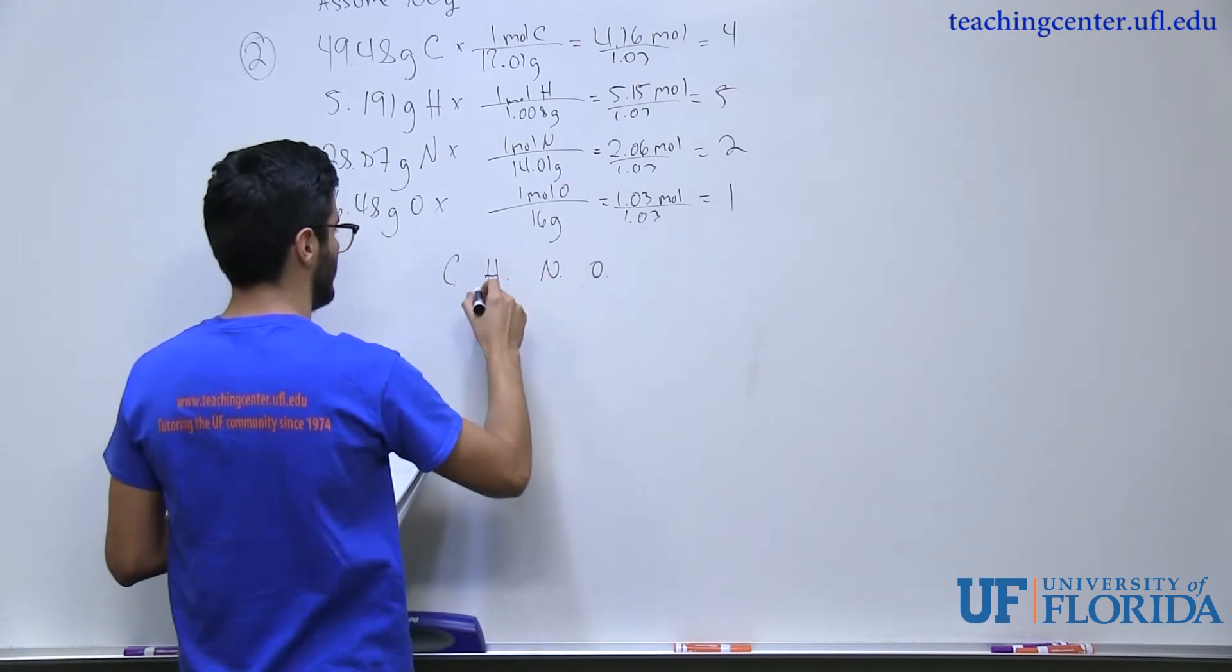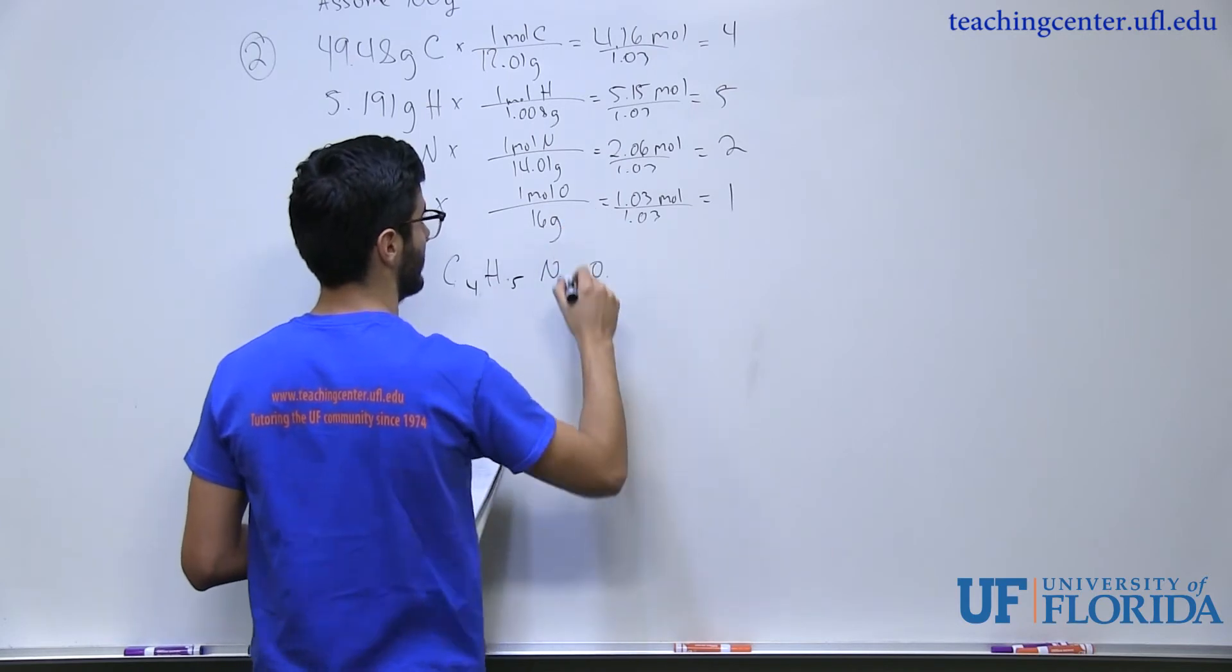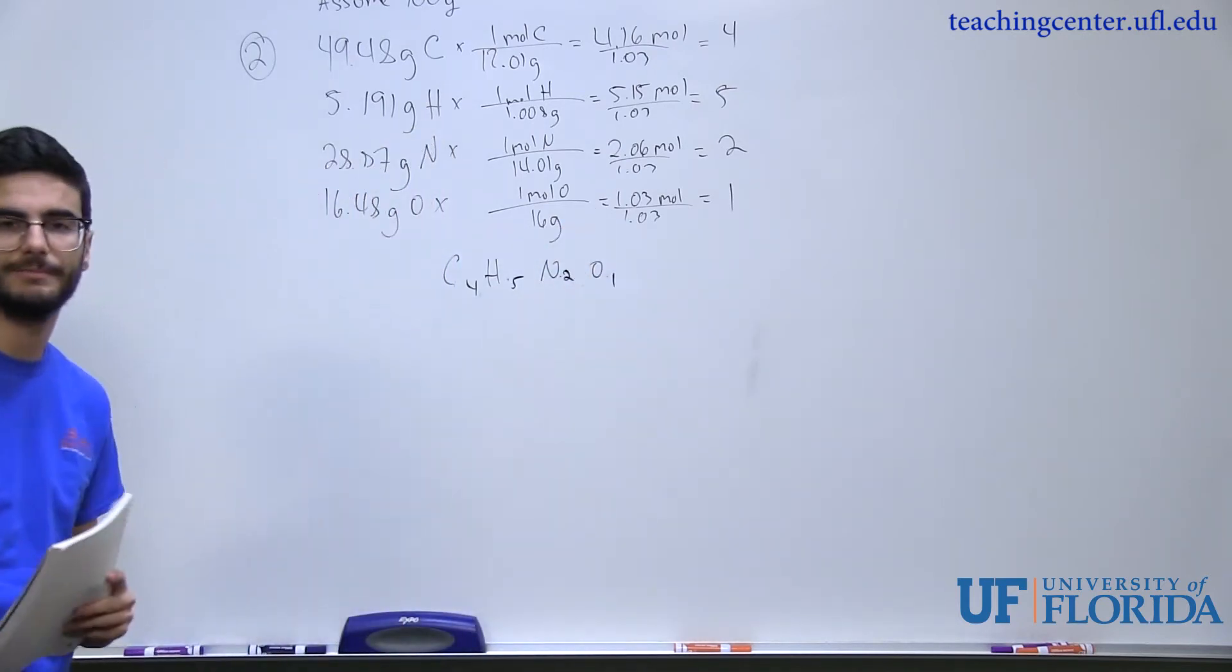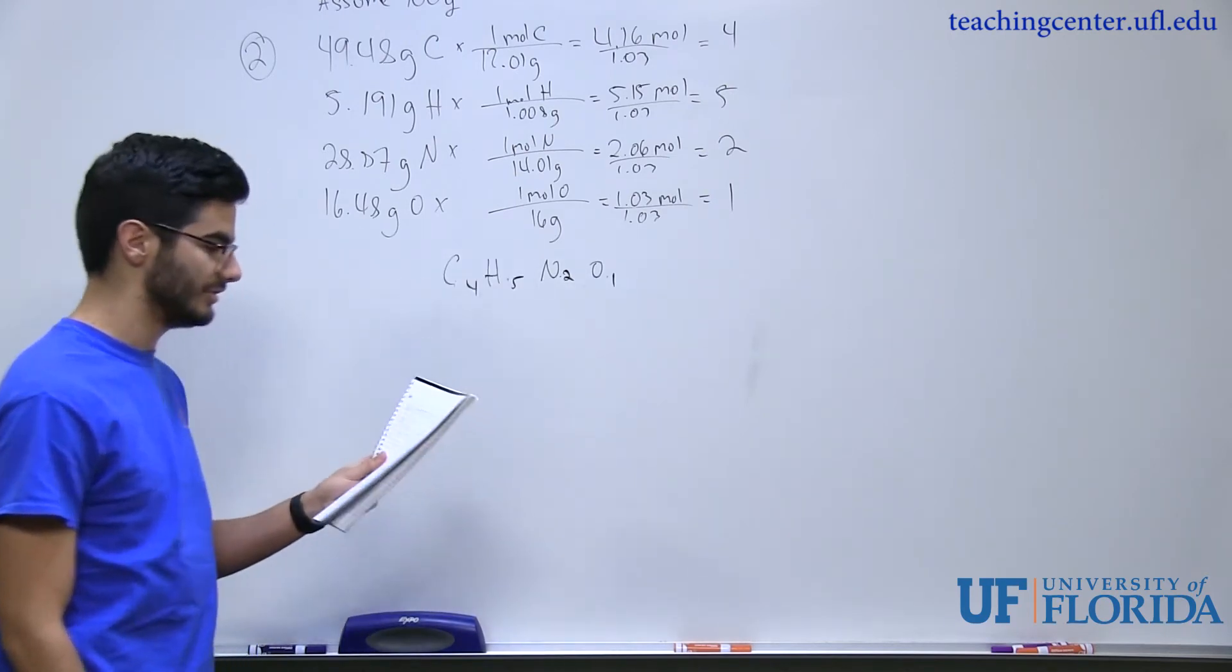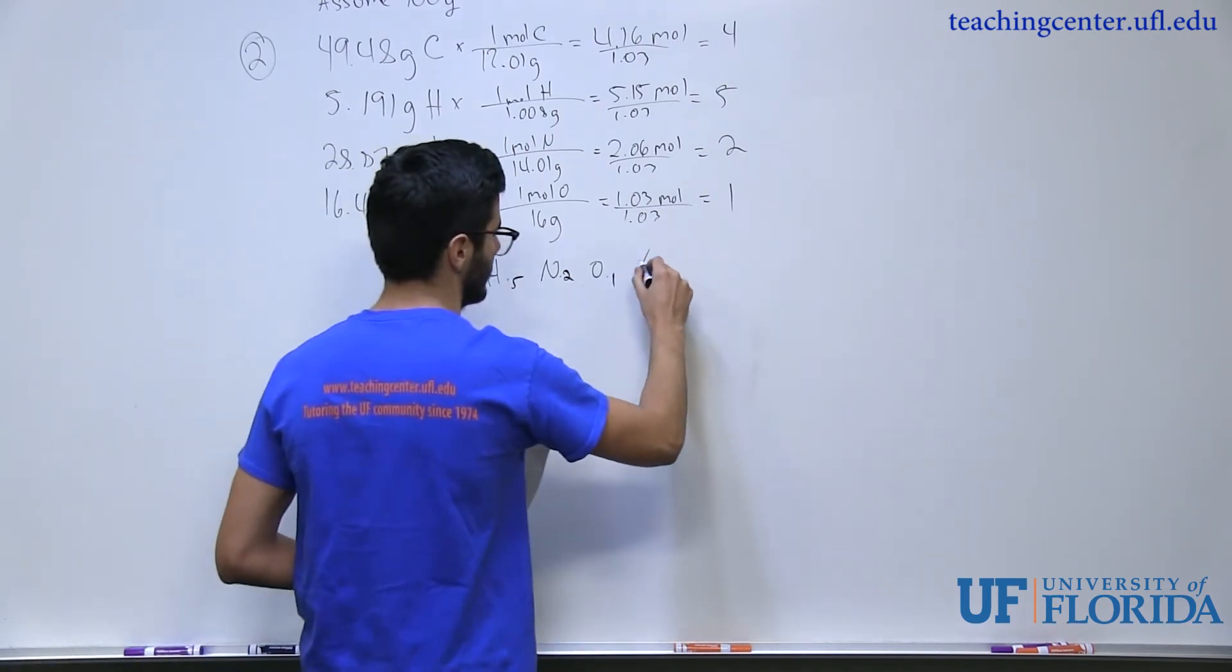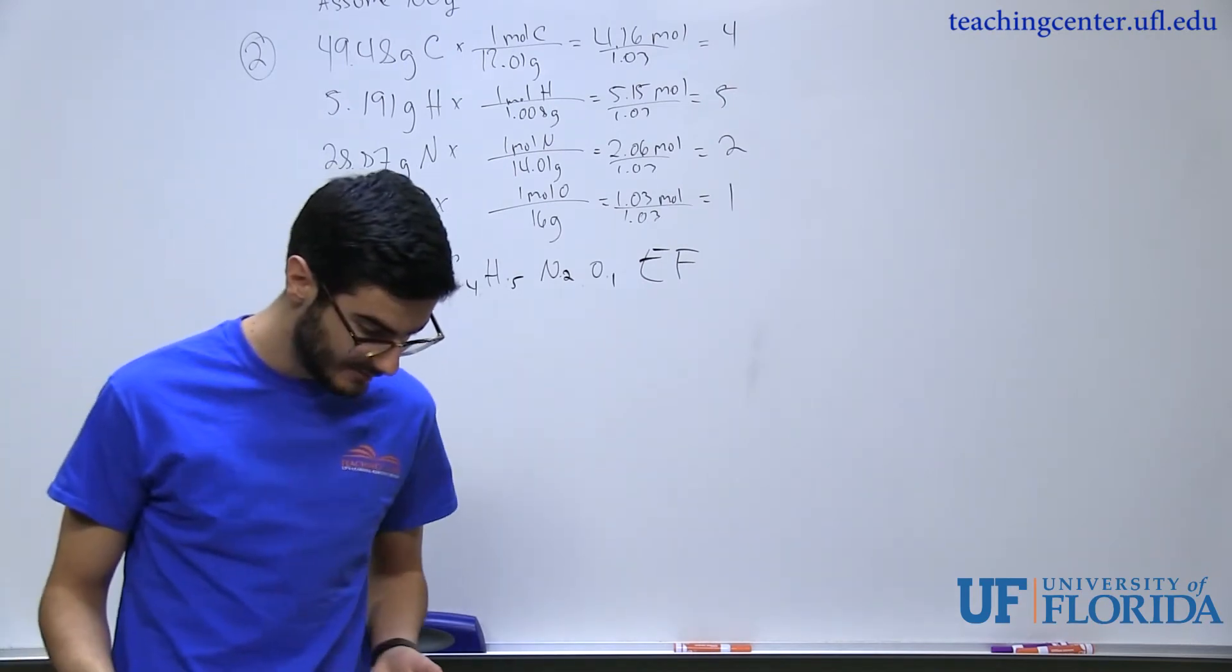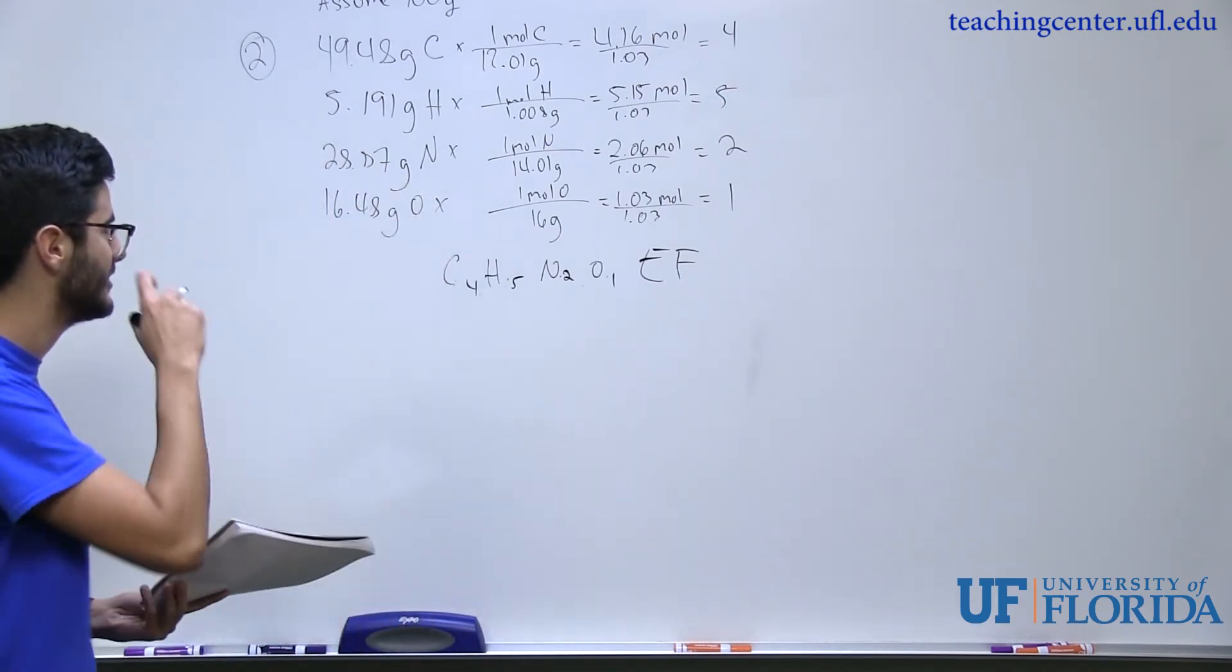So now we're looking at C4H5N2O1. That is the smallest value I can give each of these numbers. So we would call this the empirical formula. That's not what the answer is looking for. The question is looking for the molecular formula. So how do we find the molecular formula?